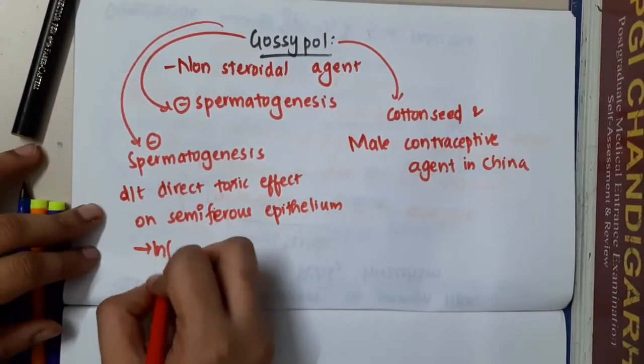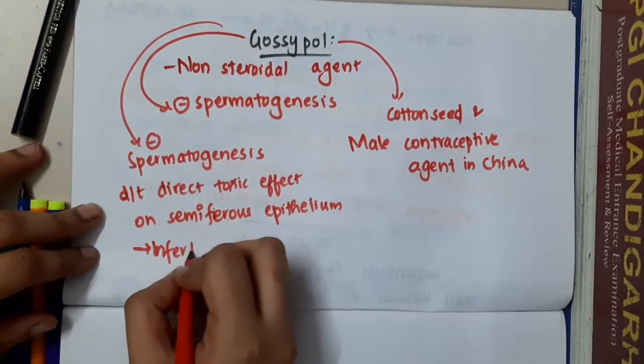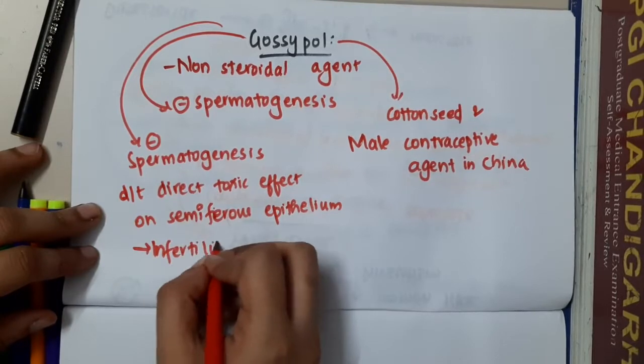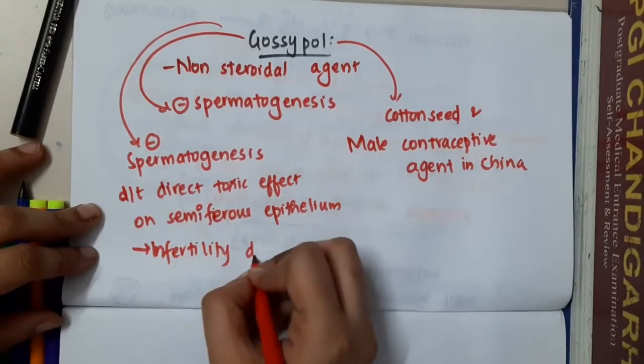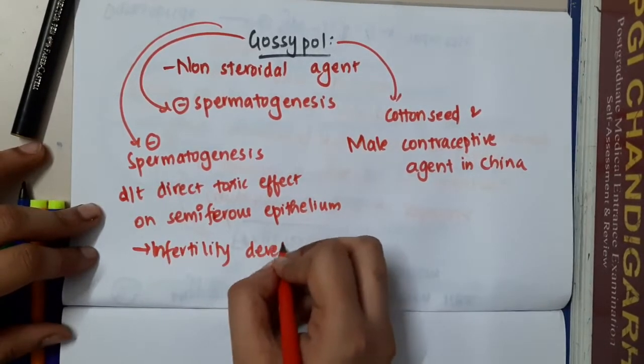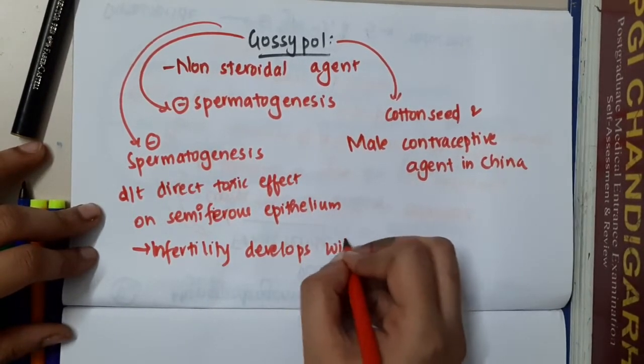Within 2 months, infertility develops due to Gossypol.